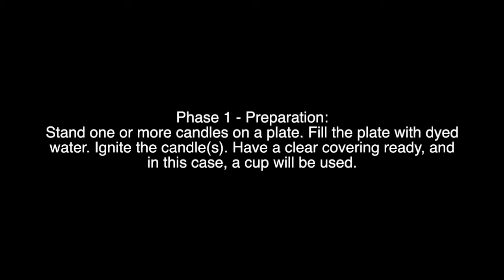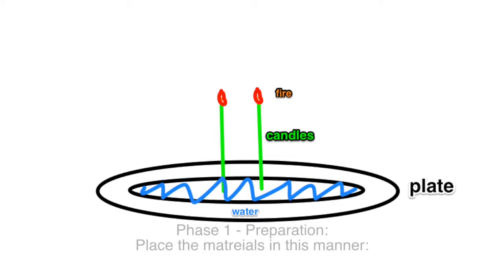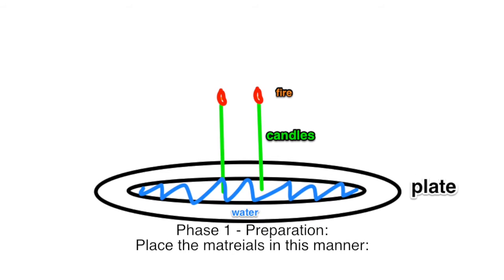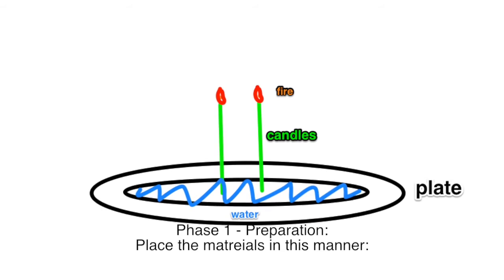Phase 1: Preparation. Stand one or more candles on a plate. Fill the plate with dyed water. Ignite the candle. Have a clear covering ready — in this case, a cup will be used. Place the materials in this manner.